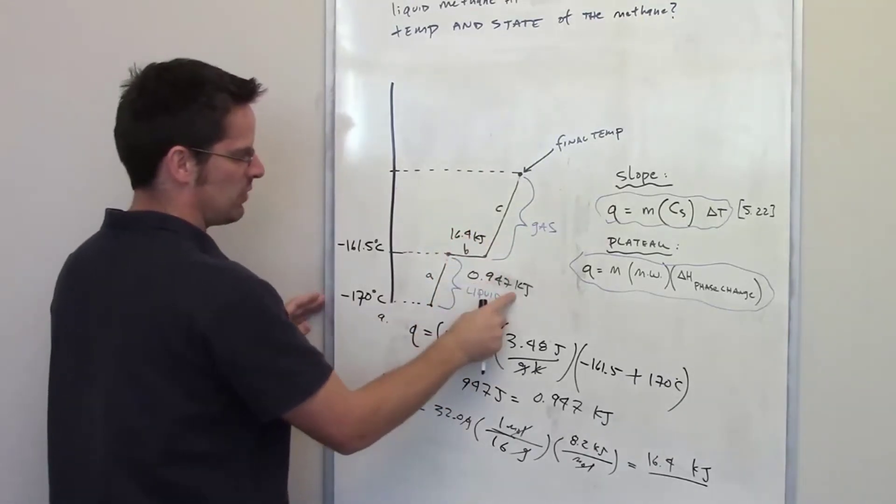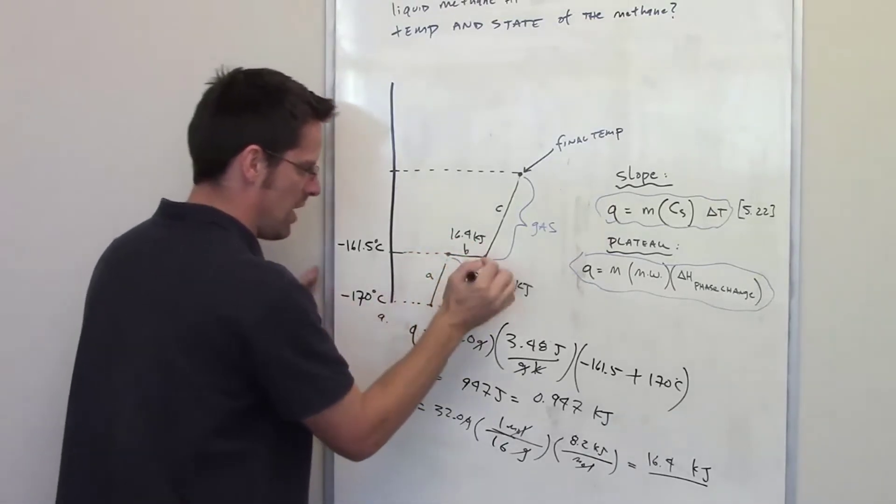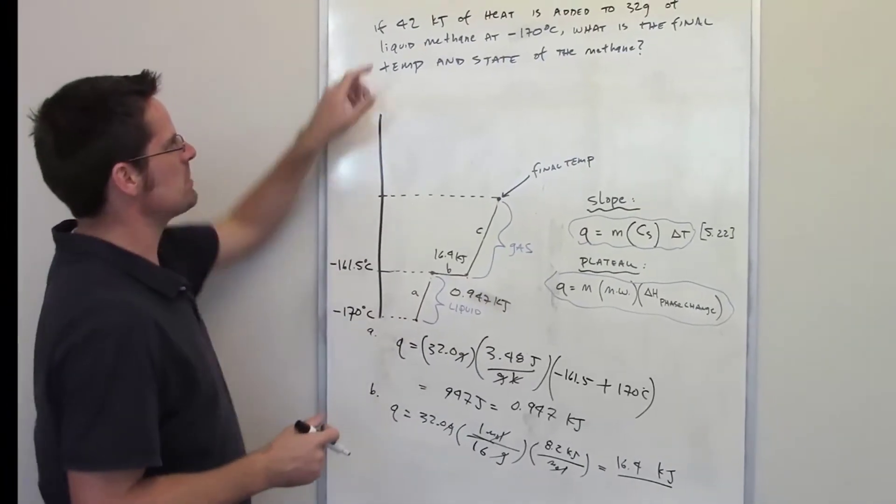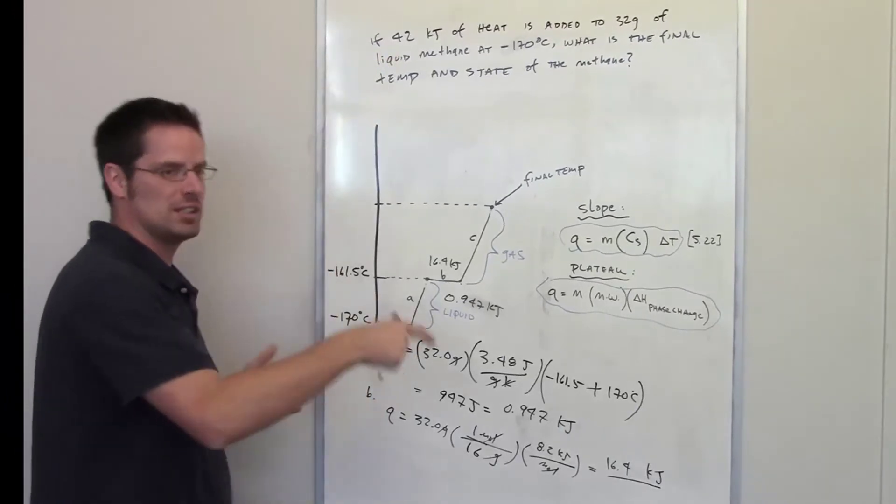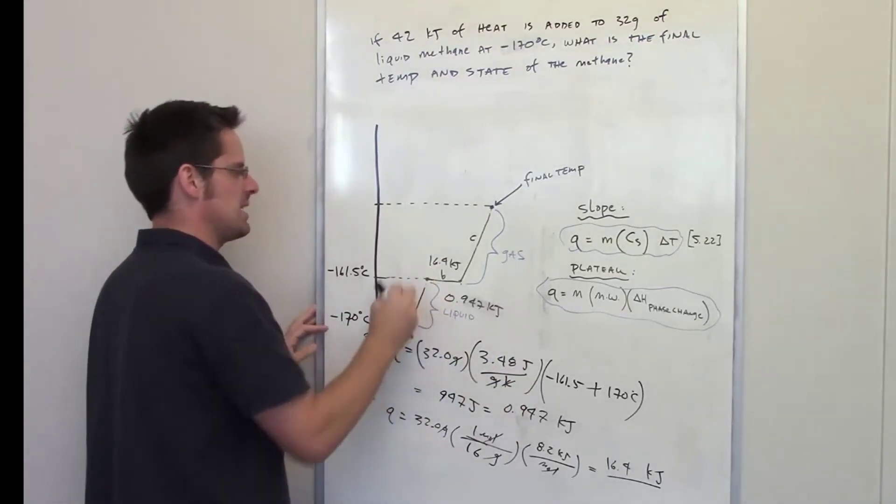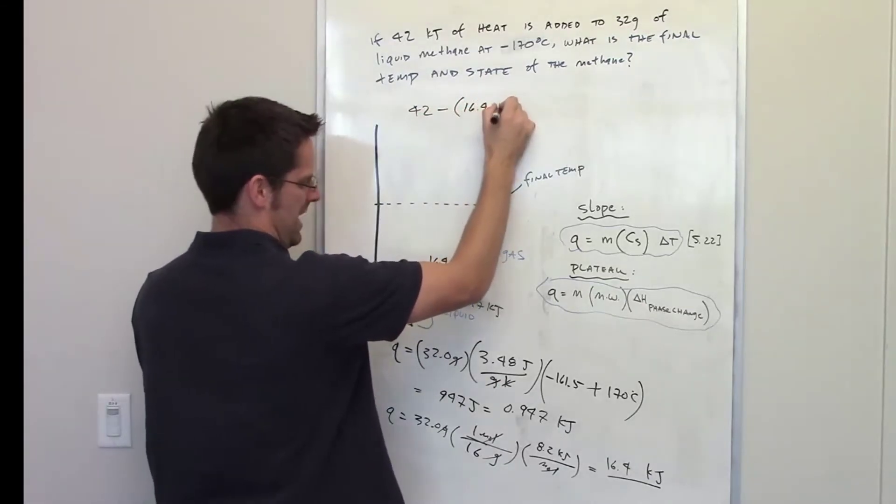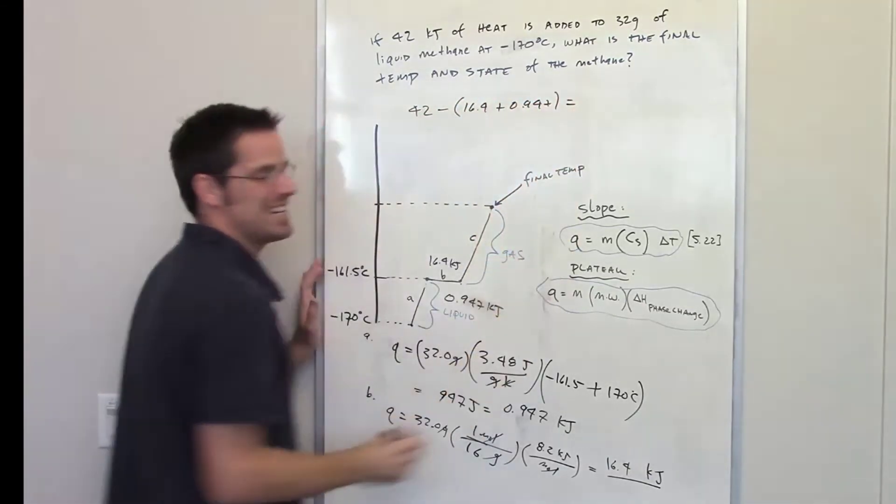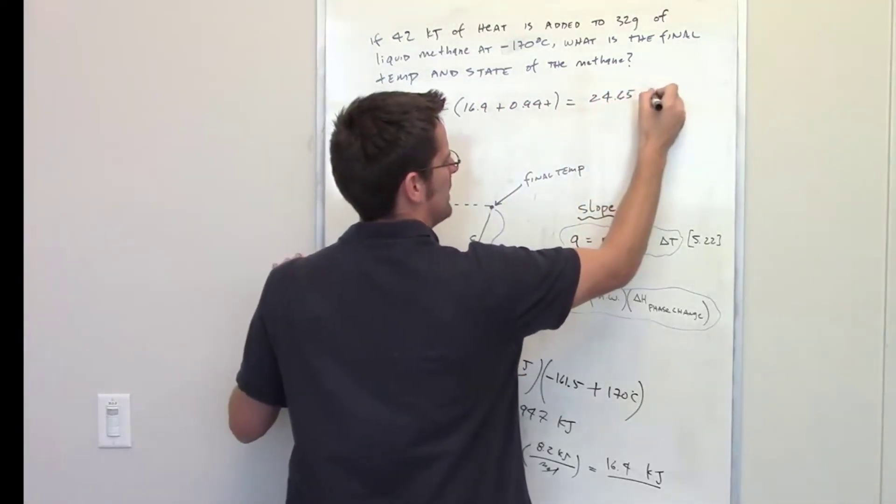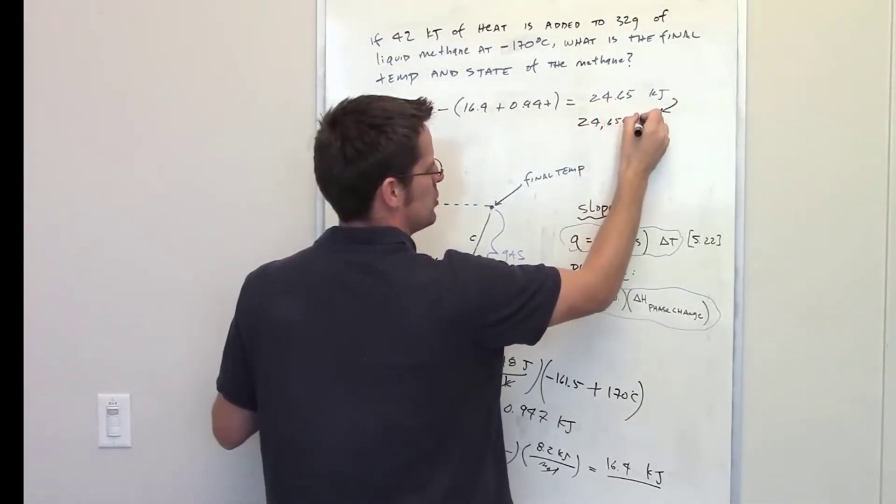So I've spent 0.947 kilojoules going up here, and then I've spent 16.4 kilojoules going across here. Now I'm right here at that point. Now, what I need to determine is how much energy I have left. It tells me in the original problem that I cranked in 42 kilojoules of heat. So how much do I have left? I've spent 0.947 and 16.4. So if I take 42 and I subtract from it 16.4 and 0.947, how much heat is left in kilojoules? The answer is 24.65 kilojoules. And I'm going to make the conversion to 24,650 joules.